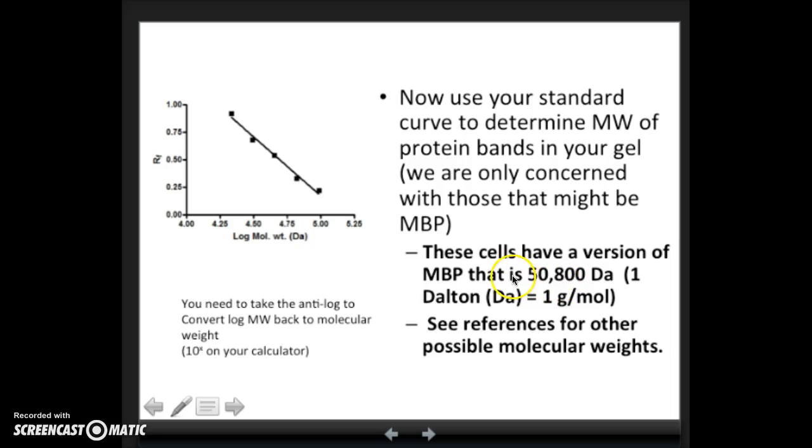Just to have something to compare it to, the maltose binding protein that is in our cells should be around 51,000 Daltons, so 50,800 Daltons.